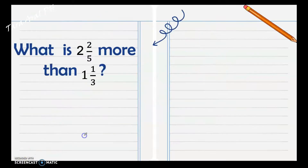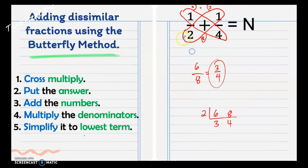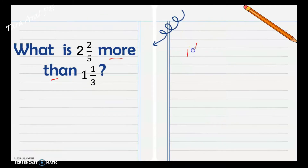Next, let's have another example. What is two and two fifths more than one and one third? When you say 'more than,' our first addend would be one and one third plus two and two fifths. They are both dissimilar fractions.